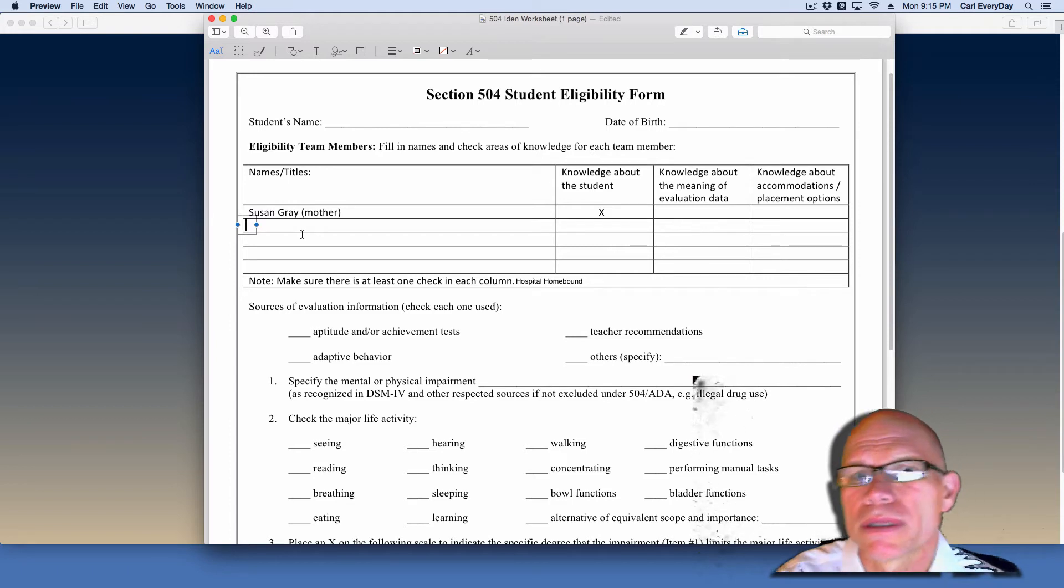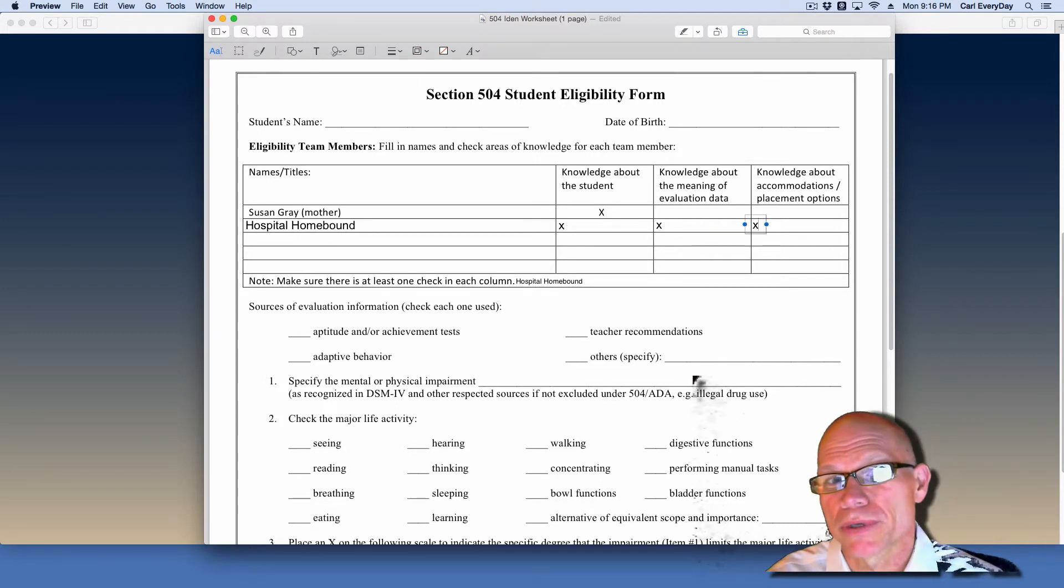So who are some of the people that might be included in James' student eligibility form? Well one person, the hospital homebound teacher, they certainly have knowledge of the student. They'll know something about the evaluation data and they probably know something about accommodations and placement options because somebody who's doing hospital homebound work or helping students transition back and forth between school and hospital likely have some experience with kids who need 504s.